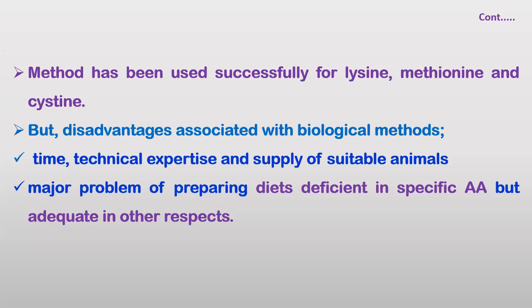A major problem with the biological assay is preparing a diet that is deficient in a specific amino acid but adequate in all other respects. Sampling, testing, and evaluation of the sample while meeting all other amino acid requirements is also a major concern. These are the disadvantages of this biological method.